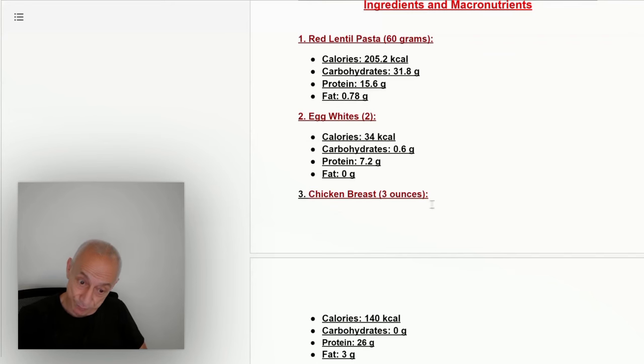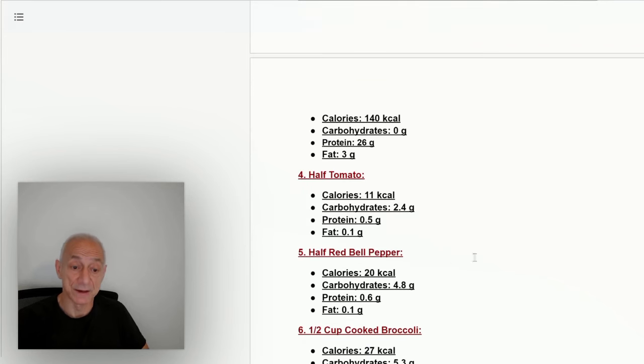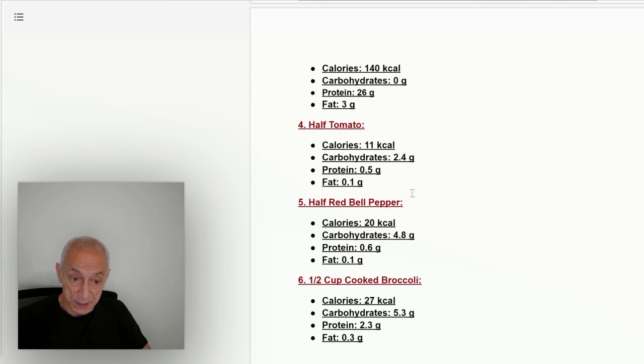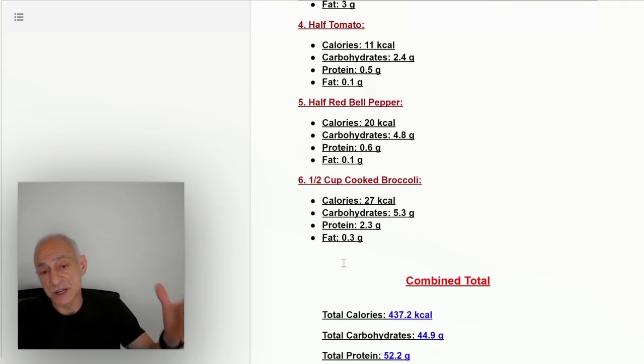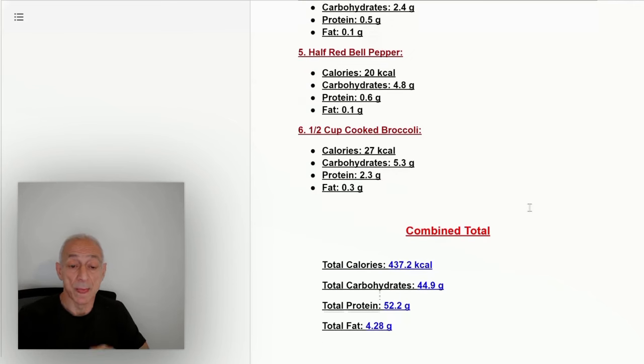With the egg whites, I put three ounces of chicken breast, 140 calories, 26 grams of protein, 3 grams of fat. Inside this meal is the rest here: half a tomato, half a red bell pepper, and a half a cup of cooked broccoli. I put seasoning in there—basil, oregano. In all my meals, most of my meals, I put a lot of dried parsley. I will break it down later.